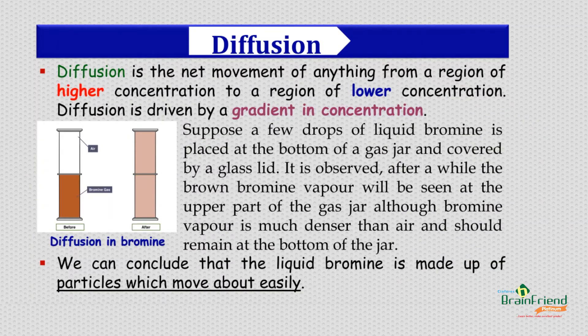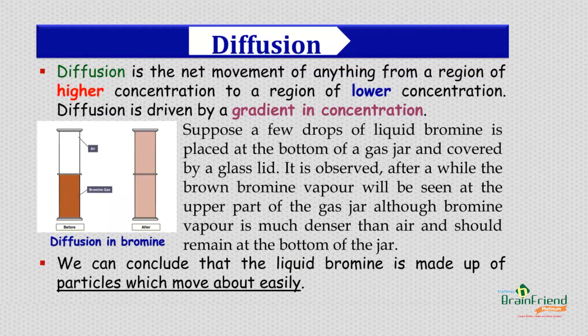Now let's look at the last evidence of the particulate nature of matter: diffusion. Diffusion is simply a net movement of particles from a region of higher concentration to another region of lower concentration. This can be illustrated using bromine liquid. When a bromine liquid is dropped in a gas jar, after some time, you discover that the particles of that liquid that have turned gaseous will be found all over that gas jar.